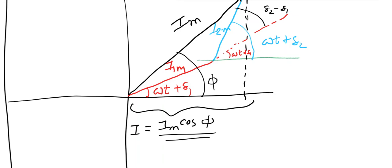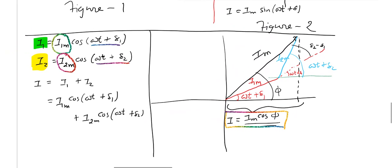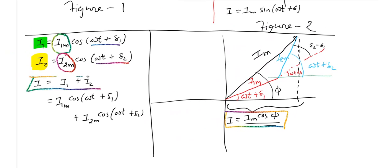So this is how you can add two mathematical functions which have sine or cosine in them. To summarize the uses of phasor: first, any physical quantity — even a scalar — can be represented in the form of a vector graphically using a phasor. Second, two physical quantities having sinusoidal functions can be added using the phasor method.